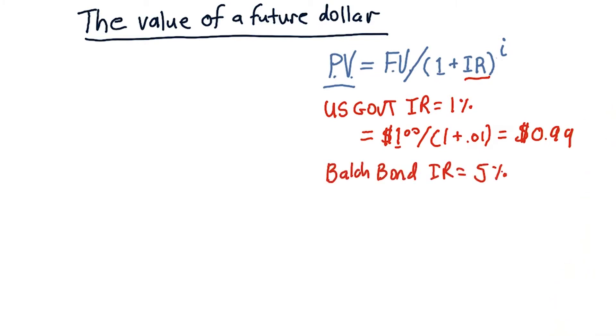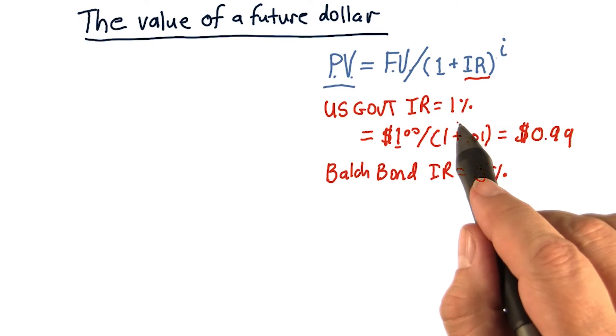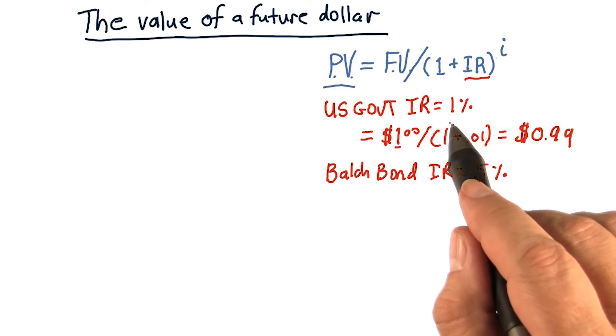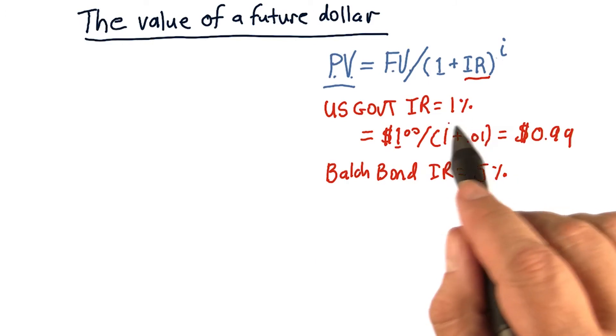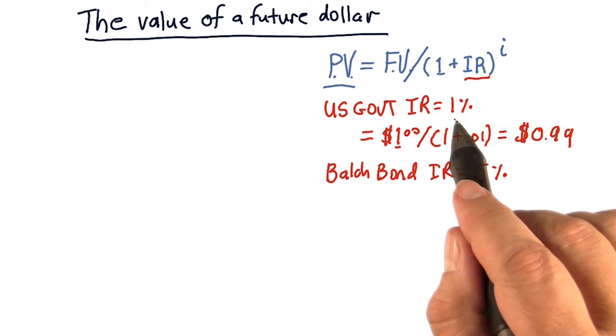Okay, consider now the Balch bond. So it's hard for me to sell you this asset right now for the same price as the U.S. government, because if you had to choose between me and the U.S. government for a 1% return, why wouldn't you choose the U.S. government? You should go with the U.S. government, because they're more trustworthy than I am.